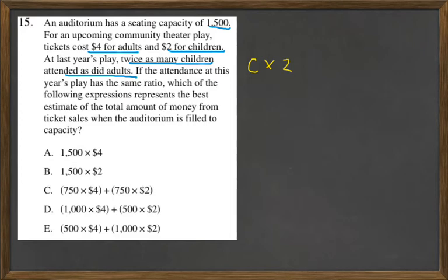And then C: you've got 750 times 4 and 750 times 2. That would mean that the same exact number of children and adults attended. So we've eliminated A, B, and C.